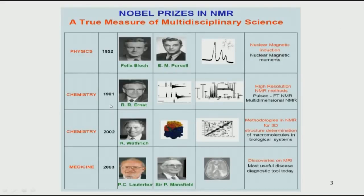NMR spectroscopy is applicable in various fields, and therefore there are many Nobel prizes given for different discoveries in NMR. Starting from the very beginning of NMR in 1952, the Nobel prize was given to Felix Bloch and Purcell, who independently and simultaneously discovered the phenomenon of NMR spectroscopy. Richard Ernst received the Nobel prize in 1991. He is well known for Fourier transform NMR (FTNMR), which is routinely used in chemistry, and he developed many of the two-dimensional NMR methods we will see in this course.